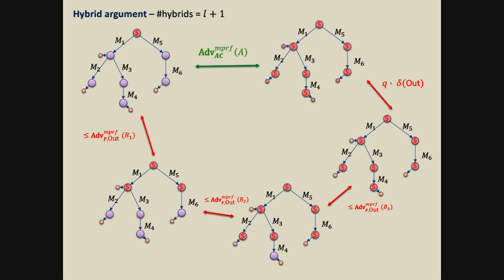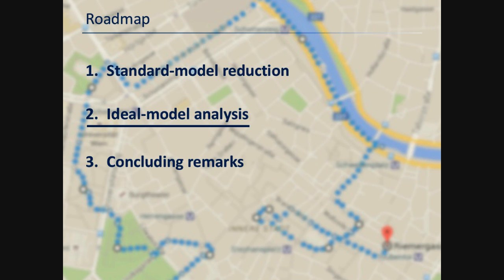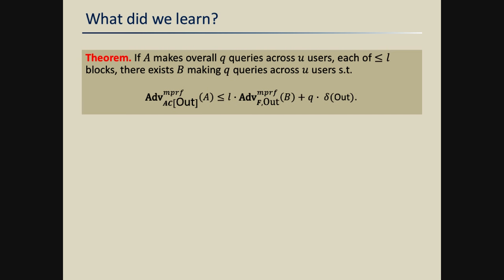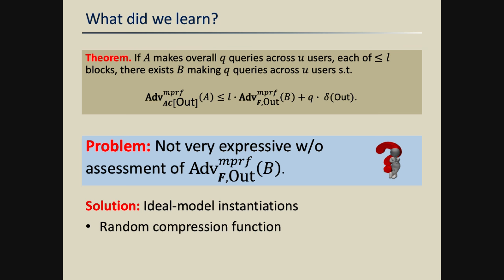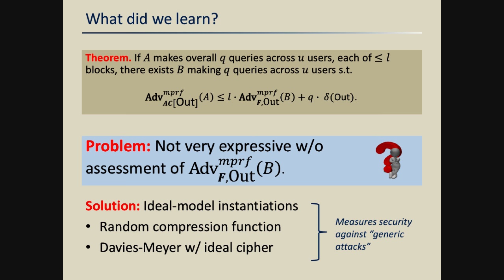Now, the reason we want to move to an ideal model analysis is that we want to make a comparison with existing constructions. We have the standard model result, but the reduction is to a new assumption on a compression function, not validated by cryptanalysis — so we don't have good numbers to put in. Instead, we transfer to the ideal model, for example by instantiating the compression function through a public random function or through Davies-Meyer in the ideal cipher model. This gives us good values to assess security against generic attackers and allows comparison with other constructions. I'm going to focus on the random compression function model.